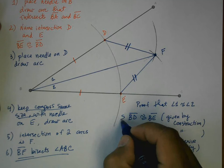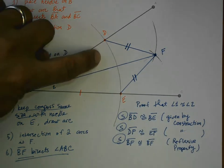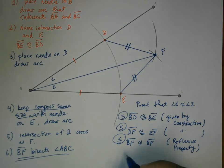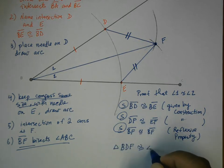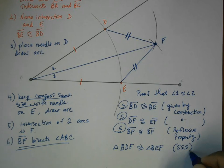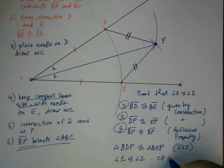And so now we have a side of a triangle, another side, and another side. So these two triangles, the top and the bottom, must be congruent to each other. So triangle BDF must be congruent to triangle BEF by the side-side-side postulate. And therefore, angle one must be congruent to angle two because corresponding parts of congruent triangles are congruent, CPCTC.